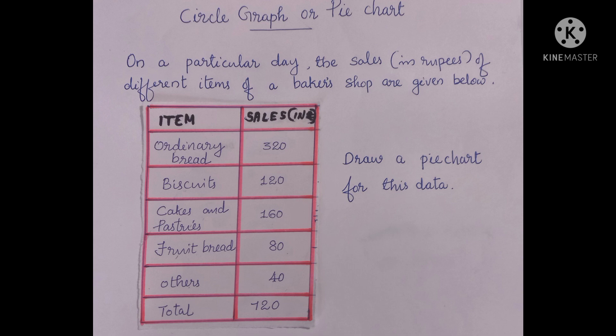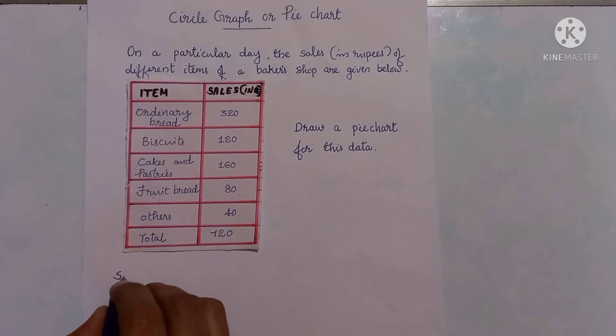We are drawing a pie chart. We can select one question from our textbook, page number 80, example 2. On a particular day, the sales of different items of a baker's shop are given below: ordinary bread 320 rupees, biscuits 120 rupees, cakes and pastries 160 rupees, fruit bread 80 rupees, others 40 rupees — total 720 rupees sale on that day. Using this data we can draw a pie chart.